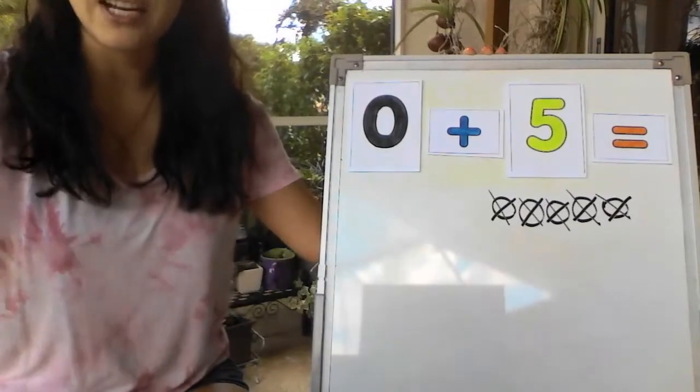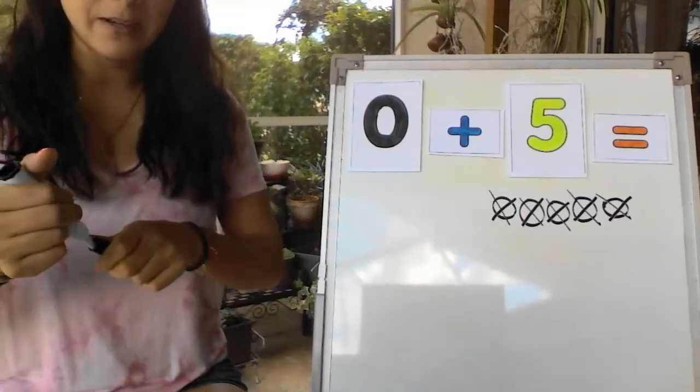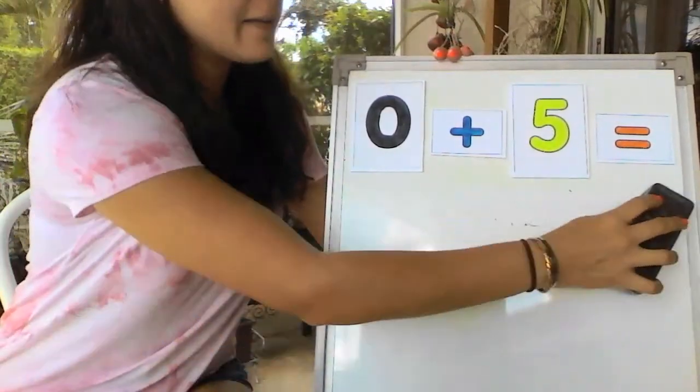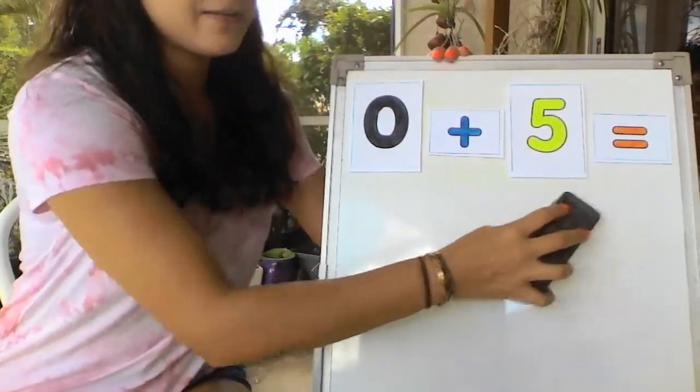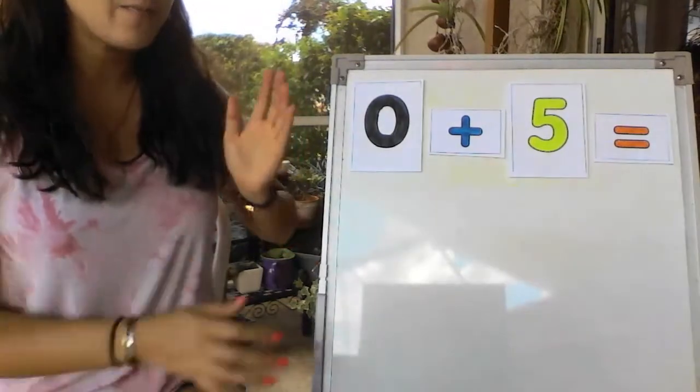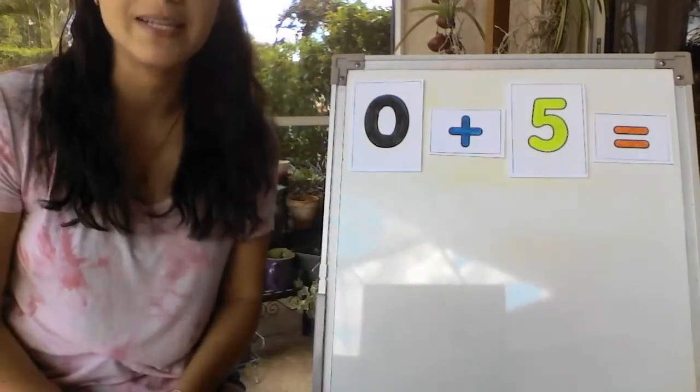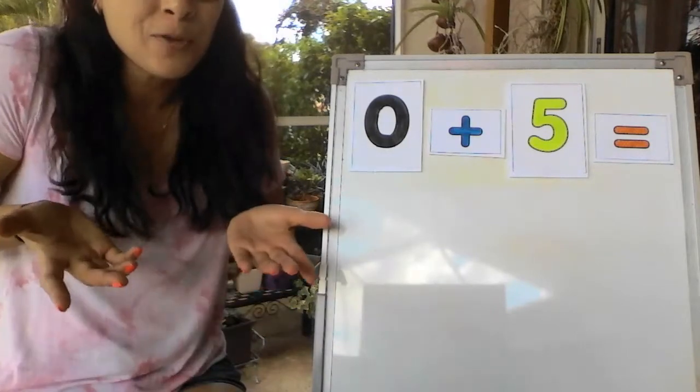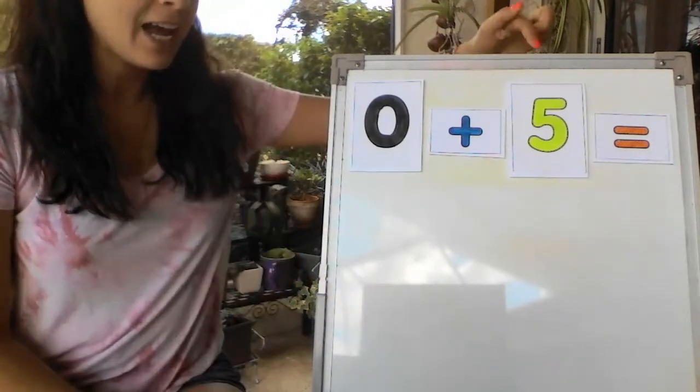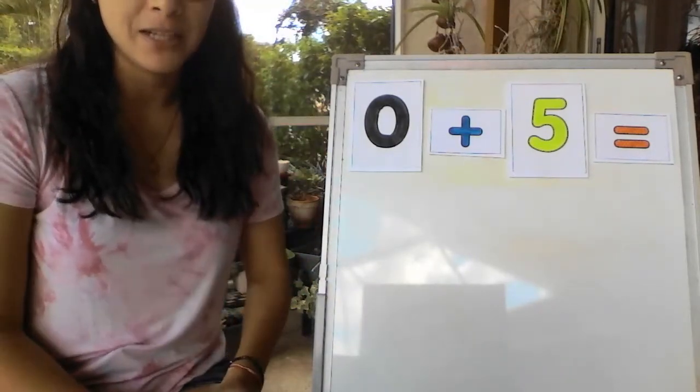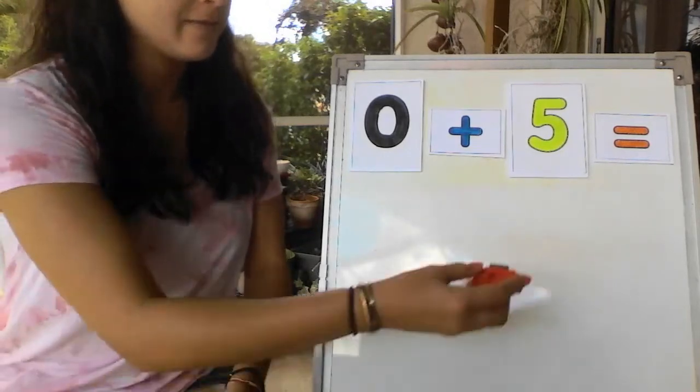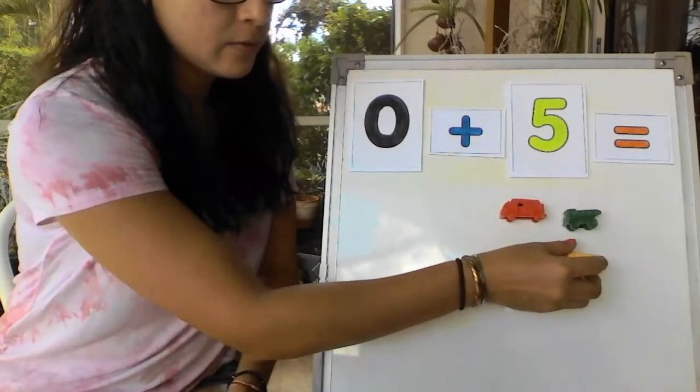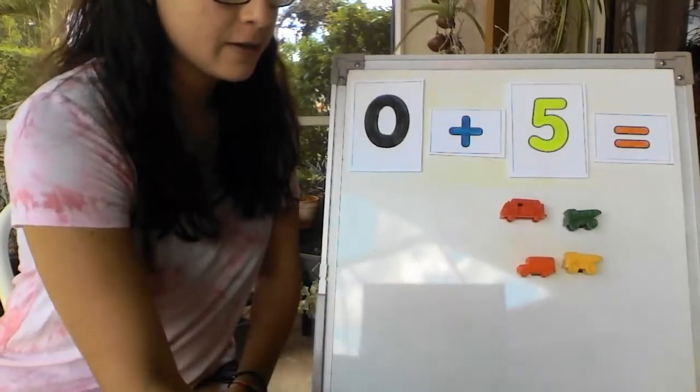Let's do the last strategy. Let's do the manipulatives. So now you're getting the hang of this. So if I have zero, how many manipulatives do I put on this side? That's right. I don't put any. But I have to put 5 manipulatives on this side. 1, 2, 3, 4, 5.